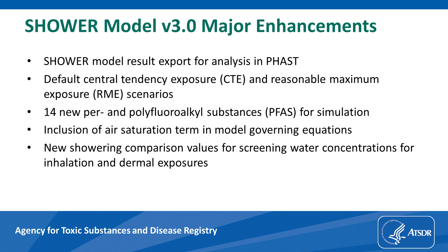A new term was added to the shower model governing equations that accounts for the effect of contaminant saturation in air. The term reflects the fact that a contaminant released into the air will slow down as the air becomes more saturated with the contaminant, up until a point where the air is fully saturated and the contaminant release rate goes to zero. Previous versions of the model did not account for this process, but version 3 does.